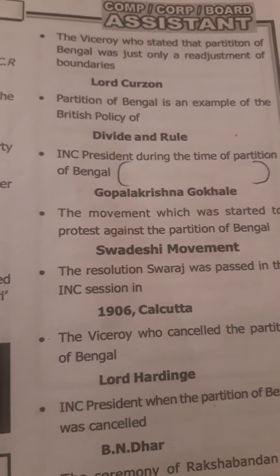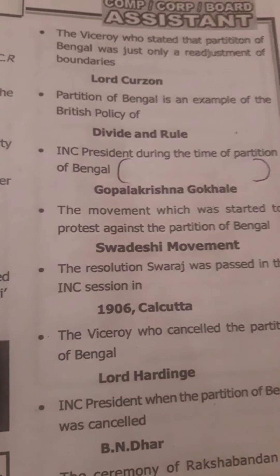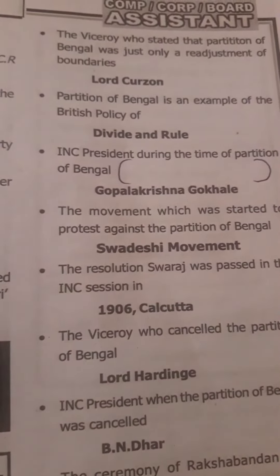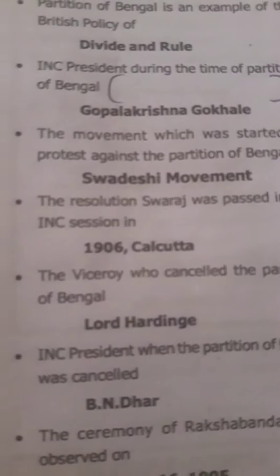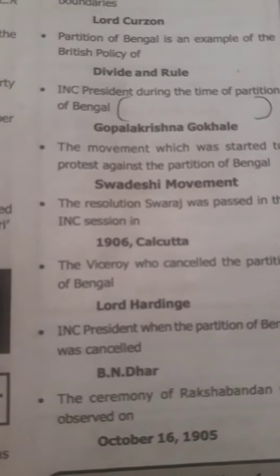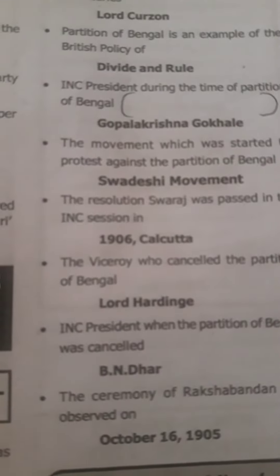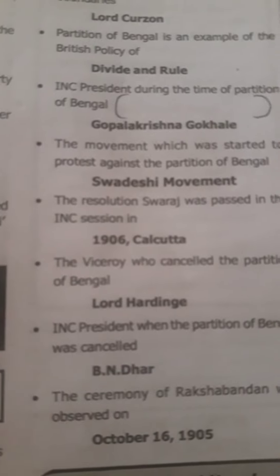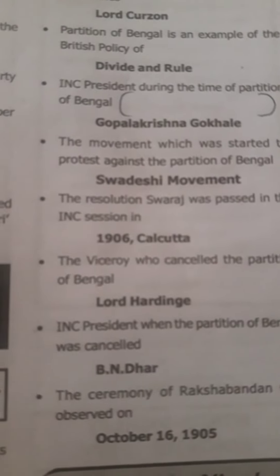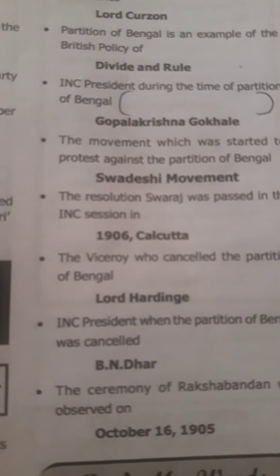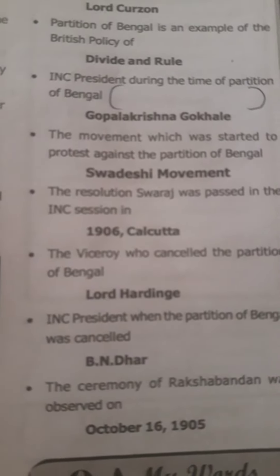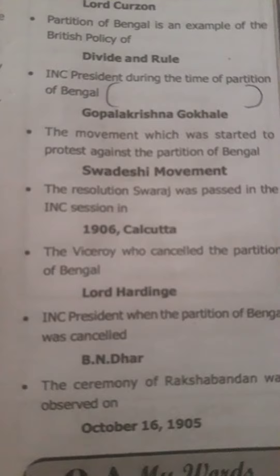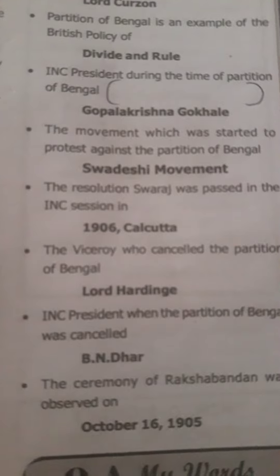The INC President during the time of the Partition of Bengal was Gopal Krishna Gokhale. The movement which was started to protest against the Partition of Bengal was the Swadeshi Movement. The resolution of Swadeshi was passed in the INC session in 1906 in Kolkata.